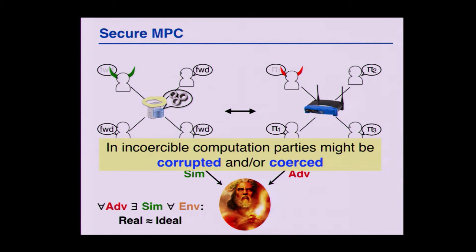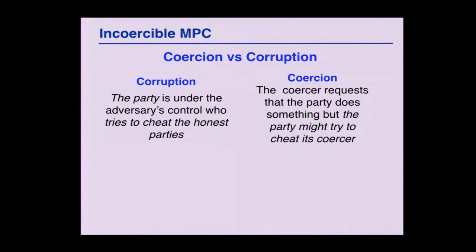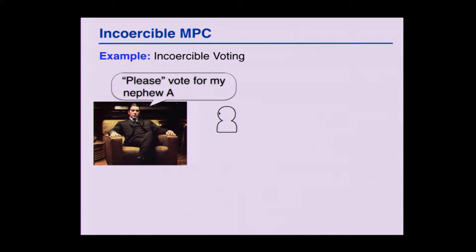In this work, we're going to augment it with a new beast: coercion. So we have corruption, and we add coercion. What is coercion? How does it compare to corruption? When an adversary corrupts a party, he takes full control of that party and tries to cheat the other parties. In coercion, on the other hand, we don't have someone taking control of the coerced party. An external entity goes and asks the coerced party to do something different than what it's supposed to do. The challenge of the coerced party is not to cheat its peers, but rather to deceive its coercer.